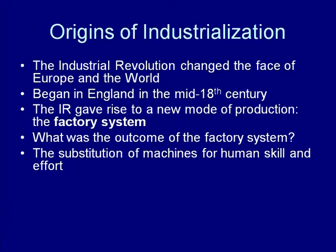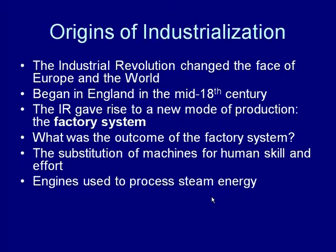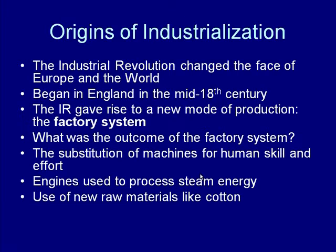Today, you can make a case that computers have taken the place of much human labor, like keeping files — people used to do them by hand, now they can be managed on a computer much more efficiently. Engines were used to process steam energy; the early Industrial Revolution was largely generated by steam energy. Raw materials like cotton were also key — the British got a lot of cotton from India and the southern United States, which allowed them to make very cheap clothing. The early Industrial Revolution was really based on textiles — the manufacture of clothing and other fabrics.